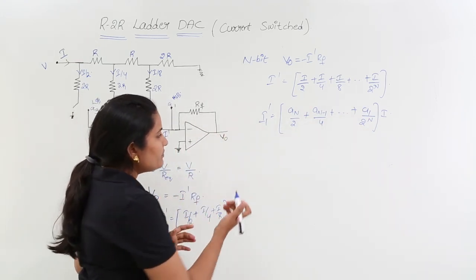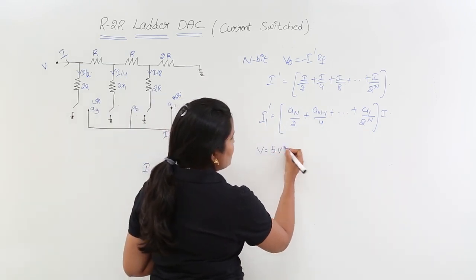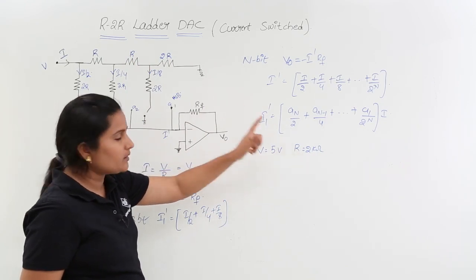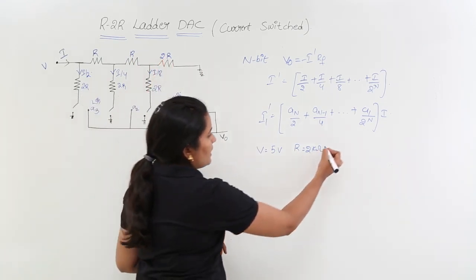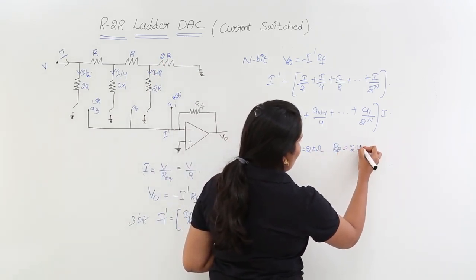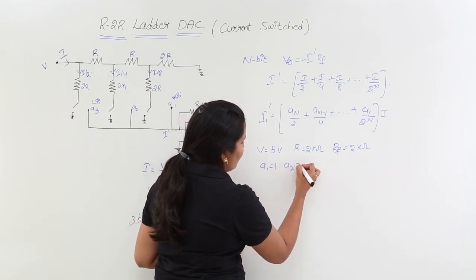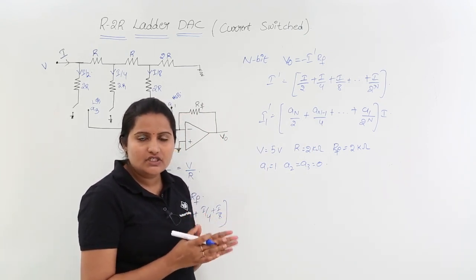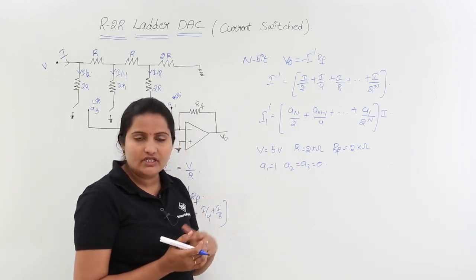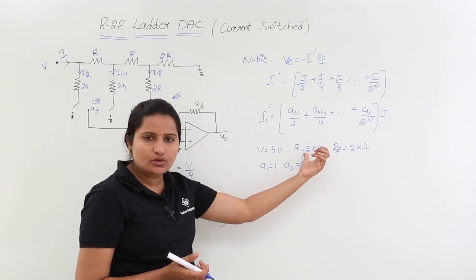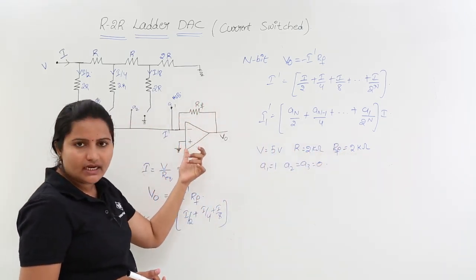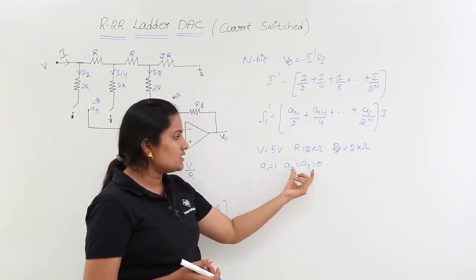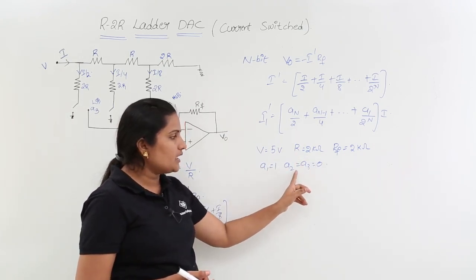Here is a worked example: the input voltage is 5 volts, R = 2 kΩ (so 2R = 4 kΩ), the feedback resistance RF = 2 kΩ, and the digital input is A1 = 1, A2 = 0, A3 = 0 (binary 100). This data is given for a current-switched R-2R ladder DAC and we need to find the output voltage.